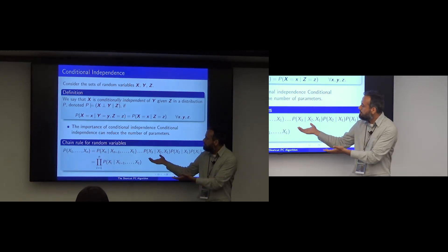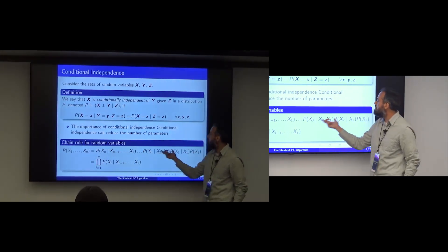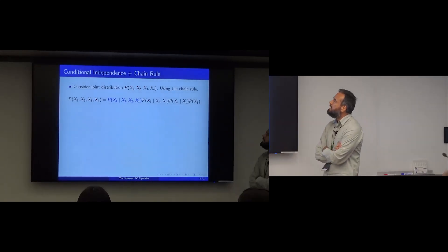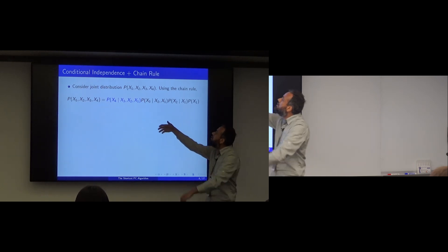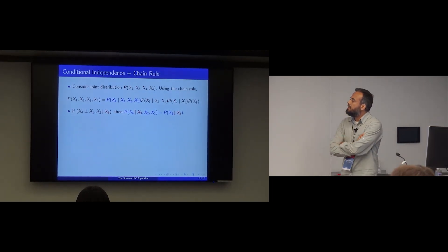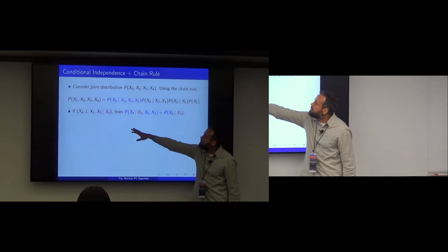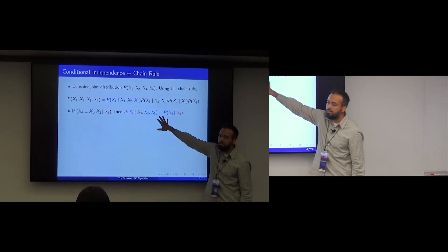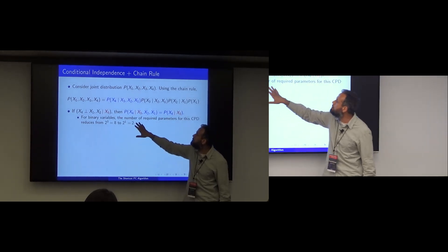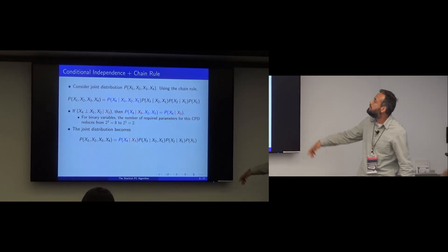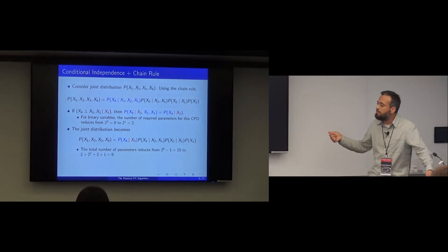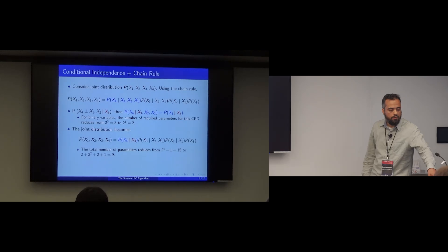Using the chain rule, we can factorize any probability distribution and then simplify. For example, with four variables X1 to X4, using the chain rule with a particular order, if we additionally know that X4 is independent of X1 and X2 given X3, then the number of parameters for that conditional probability distribution reduces from eight to two. Putting it back into the original joint, the distribution goes from 15 parameters down to nine.